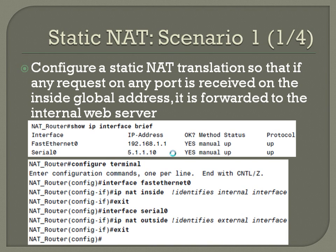Start off by getting familiar with your interfaces. Do a show IP brief, and you can see that you've got your LAN block 192.168.1.1 and your WAN 5.1.1.10. Both of those are up-up, looks like they should be working, so those are already configured.